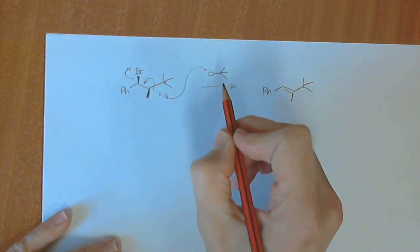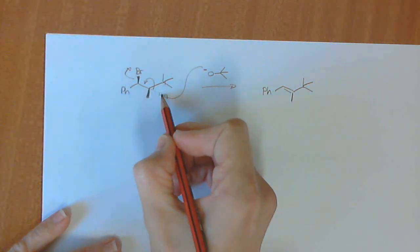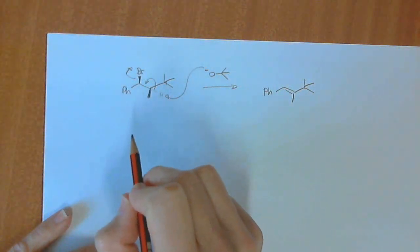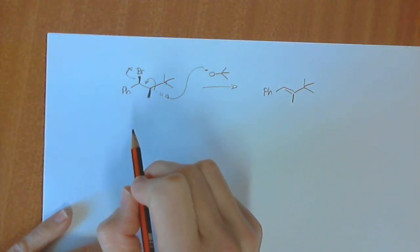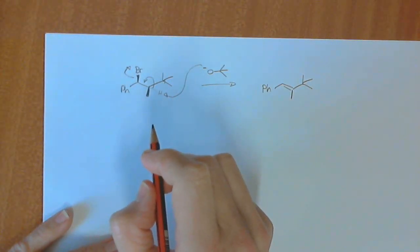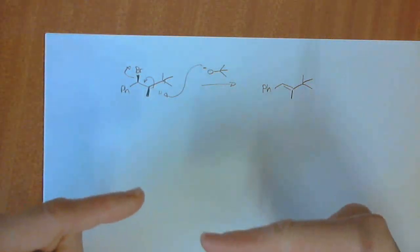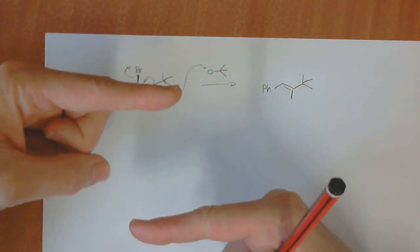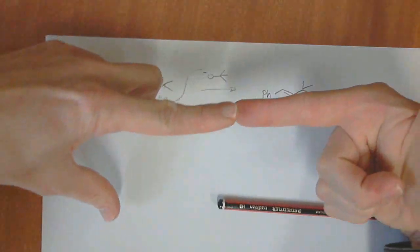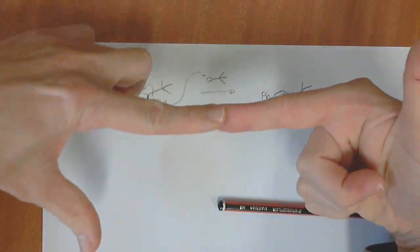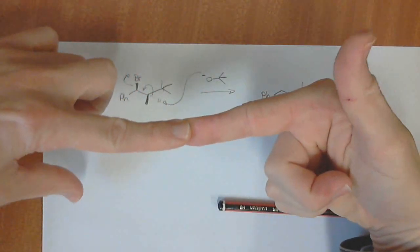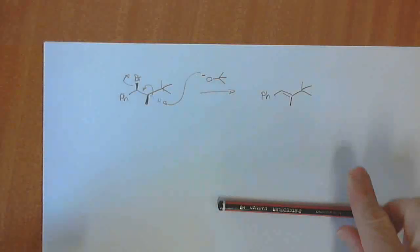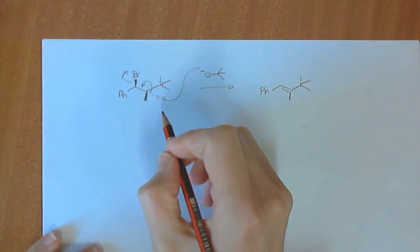To really work this out, we have to remember that the proton and the bromine have to be antiperiplanar to each other in order to eliminate. This is so that the orbitals can overlap. They've got to be on opposite carbons. They actually have to be antiperiplanar. They've got to be on opposite sides so that they can overlap.